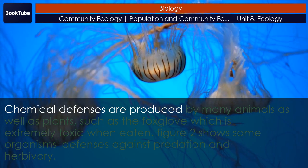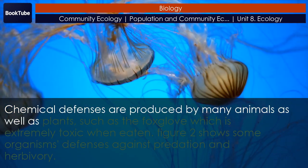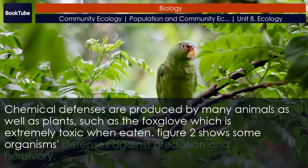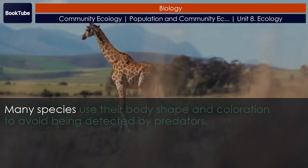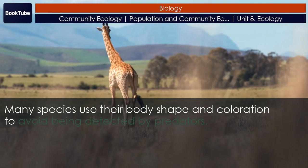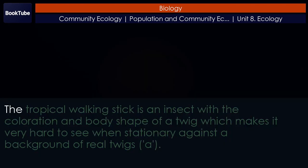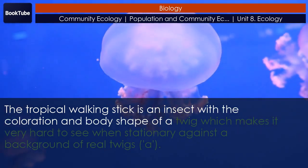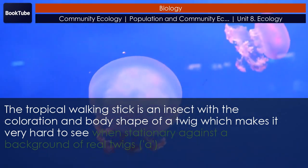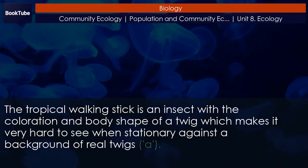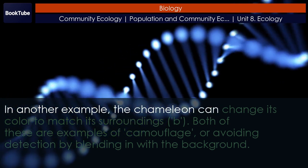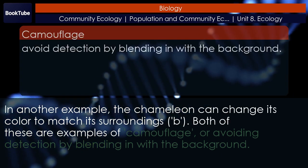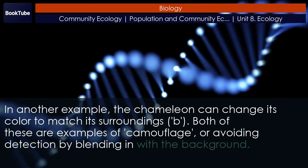Chemical defenses are produced by many animals as well as plants, such as the foxglove, which is extremely toxic when eaten. Many species use their body shape and coloration to avoid being detected by predators. The tropical walking stick is an insect with the coloration and body shape of a twig, which makes it very hard to see when stationary against a background of real twigs. The chameleon can change its color to match its surroundings. Both of these are examples of camouflage — avoiding detection by blending in with the background.